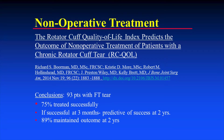A study on the rotator cuff quality of life index as a predictor of non-operative treatment outcomes looked at 93 patients with chronic rotator cuff tears. 75% were treated successfully non-operatively. If they were successful at three months, that predicted good success at two years, and 89% maintained their outcome at two years. This shows that some patients with chronic rotator cuff tears do well with physical therapy alone.